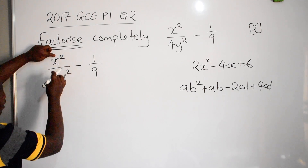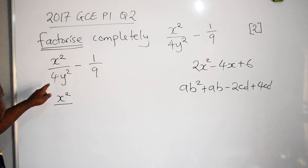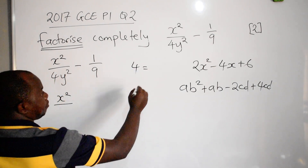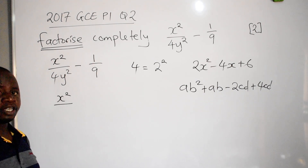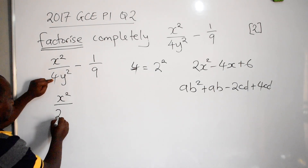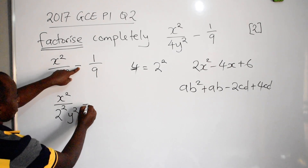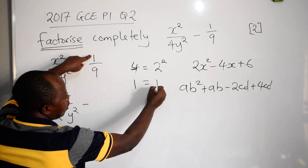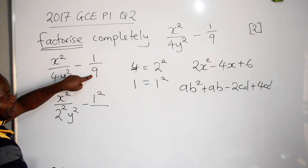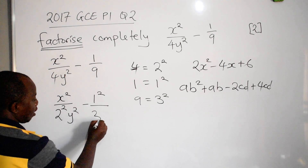x squared can be copied as it is, since it is already in square form. The 4 is changed to 2 squared, and y is already squared. Then 1 is changed to 1 squared, and 9 is changed to 3 squared. Now look at what we have — everything is in square form.